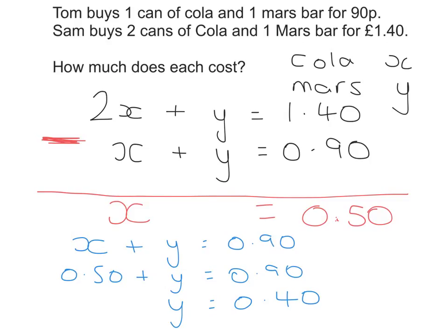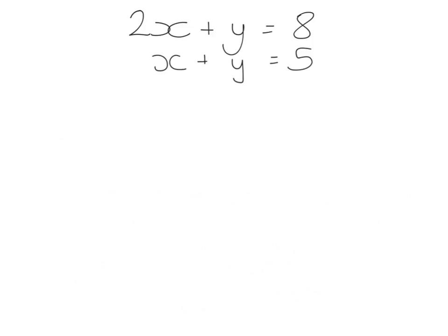And that is giving us the same answer as I just got when we looked at it just using logic. 50p for x, that's a cola. And the Mars bar is y, and y is 40p.